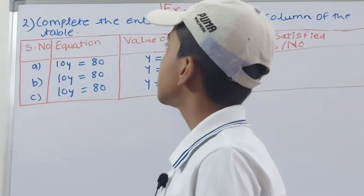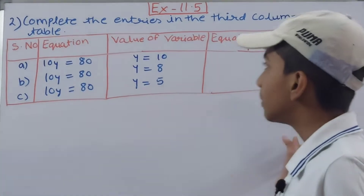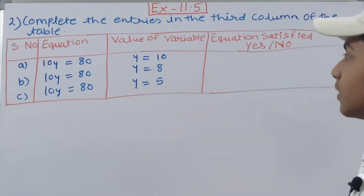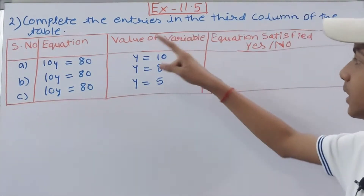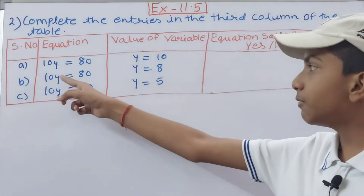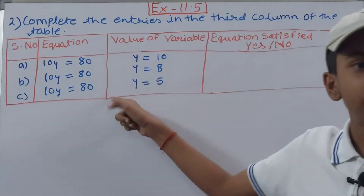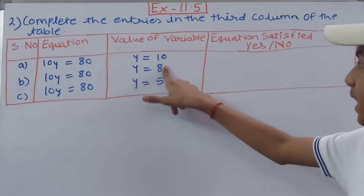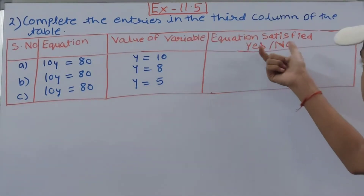This question says: complete the entries in the third column of the table. You can see a table is given with columns: first is the equation, then value of variable. There is a variable y in these equations, and we have assumed the value of y as 10, 8, and 5. Now it is asking us: equation satisfied — yes or no?